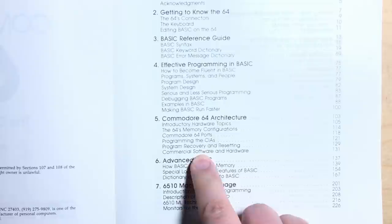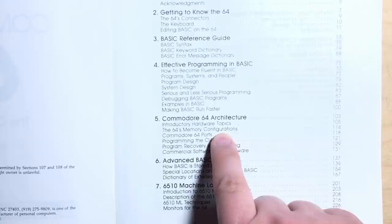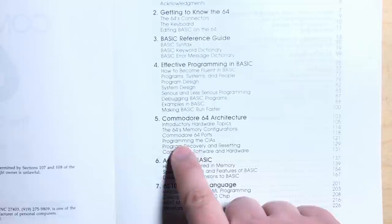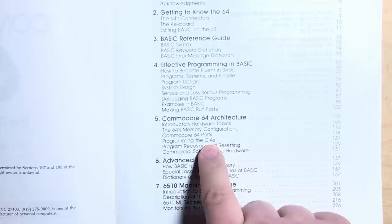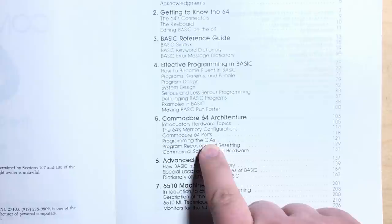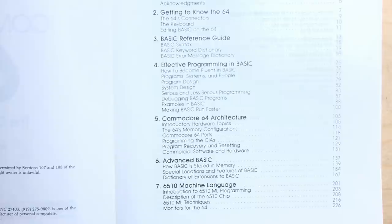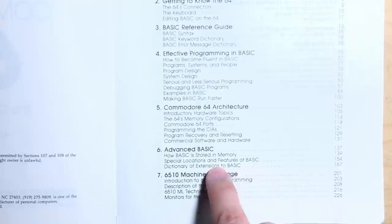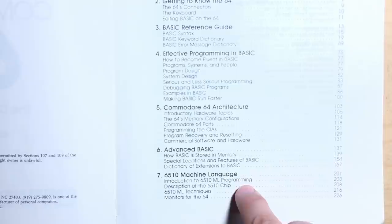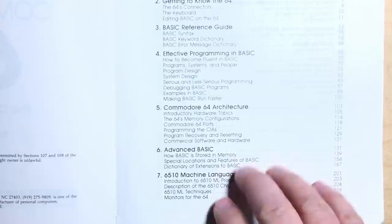Next, Commodore 64 architecture, introductory hardware topics, the 64's memory configurations, very good information about location one and zero. Commodore 64 ports, programming the CIAs, the complex interface adapters. Those are the chips that have timers in them and communicate with the keyboard, the joysticks, and so on. Program recovery and resetting, commercial software and hardware, advanced basic. How basic is stored in memory, special locations and features of basic, dictionary of extensions to basic. Anybody who's interested in the programming videos I make will find this an incredible reference.